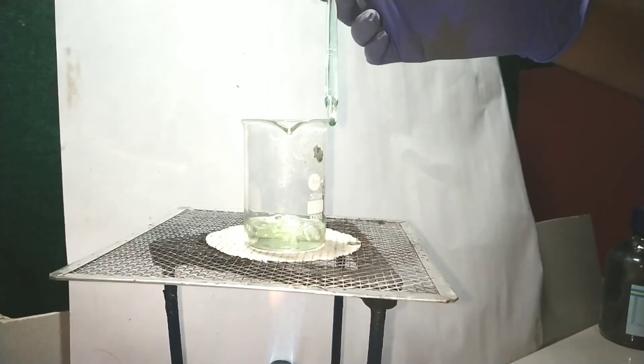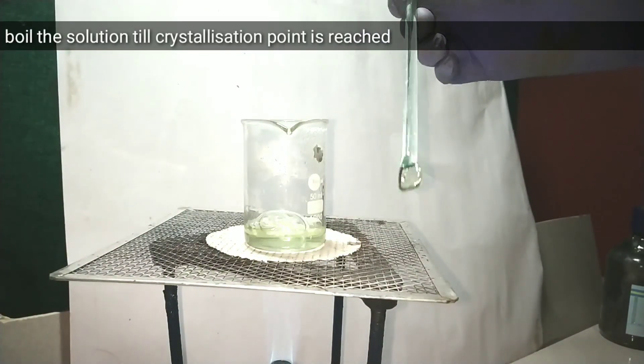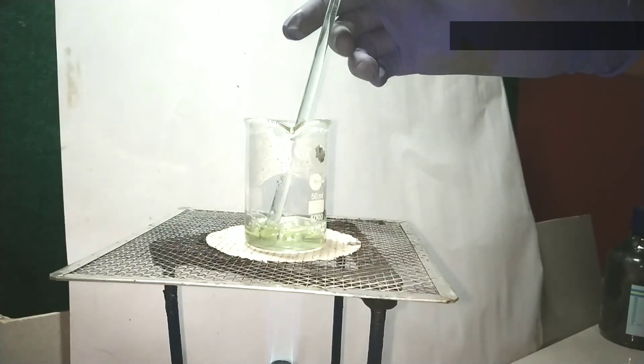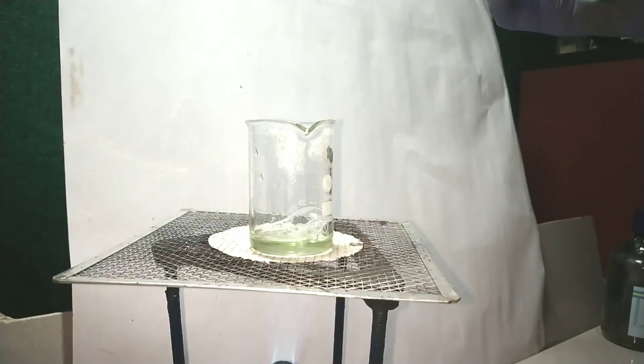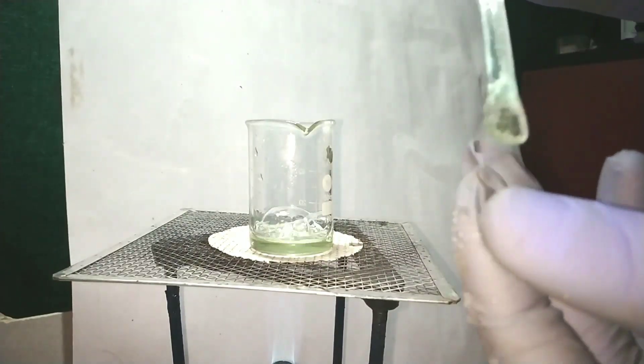After dissolving it completely boil off some amount of water until the crystallization point is reached. You can check the crystallization point by dipping a glass rod into the solution and blow drying it to cool and observe for any crystals formed.